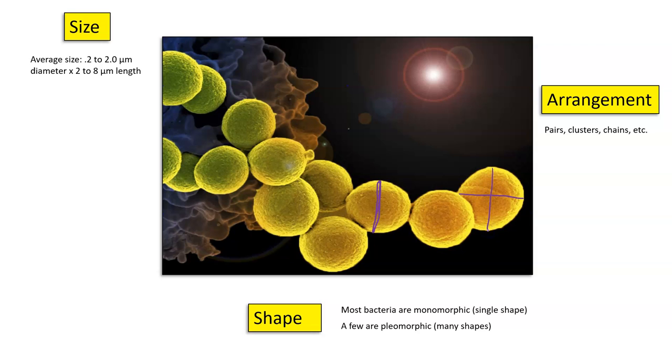But some bacteria, as you're going to see in a later slide, are not always spherical. Some of them are elongated, some are spiral, some are bent, some are rod shape. So on average, it is 0.2 to 2 micrometers in diameter and 2 to 8 micrometers in length. That is very, very small.